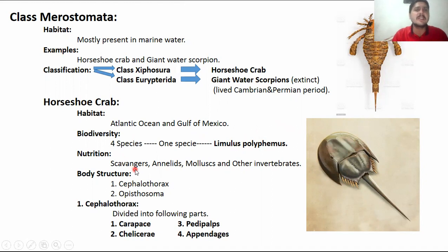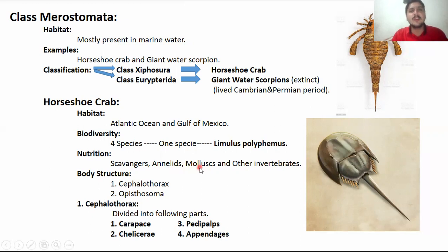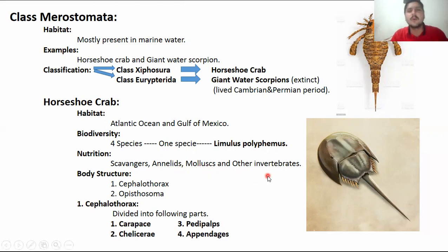Regarding nutrition, Merostomata are scavengers. They eat worms, they eat small mollusks, snails, annelids, and other invertebrates.